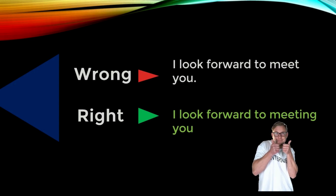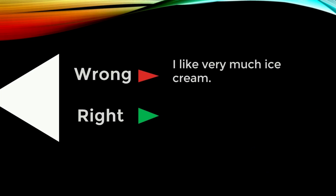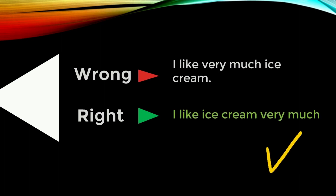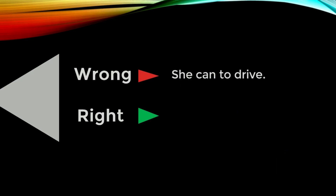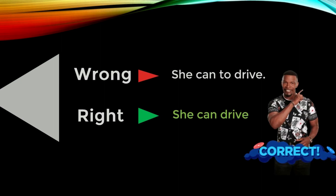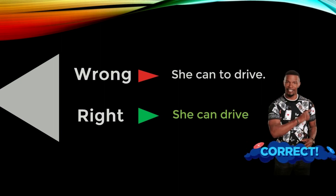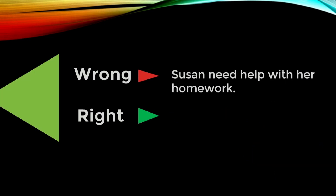'I like very much ice cream' — sometimes in English you have to see how it sounds. Obviously this sentence doesn't sound right. The correct form is: 'I like ice cream very much.' Next: 'She can to drive' — 'to' is unnecessary here. The correct form is: 'She can drive.'